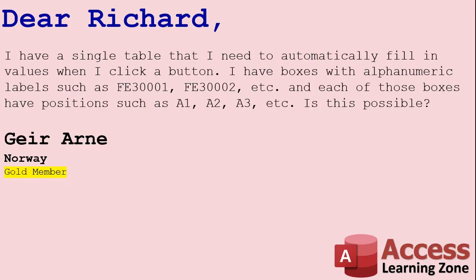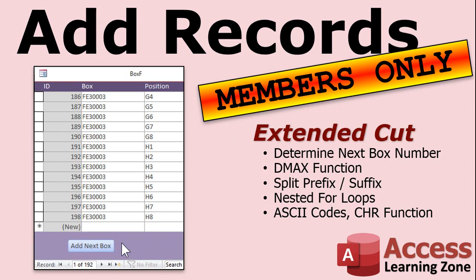In the extended cut for members, we'll take this further for Garen's question. We'll need to do looping — the boxes use alphanumeric values like FE30001, so we have to separate the prefix and suffix, add to the suffix, and create sub-records for positions A1 through A8 and so on. We'll use the DMax function to find the next box number, split the prefix and suffix, use nested For loops for positions, and learn about ASCII codes and the Chr function.